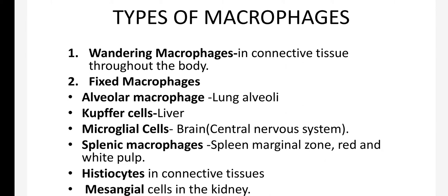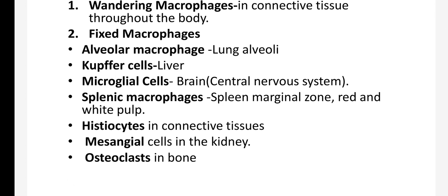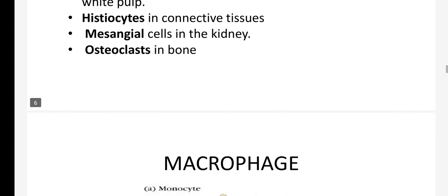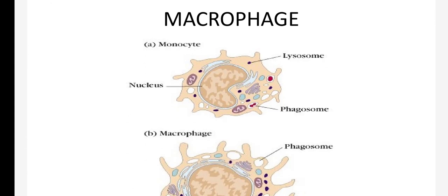There are also fixed macrophages — macrophages present in the lungs are called alveolar macrophages, Kupffer cells are present in the liver, microglial cells are in the brain, splenic macrophages are in the spleen, histiocytes are in the connective tissue, mesangial cells are in the kidney, and in the bones we call them osteoclasts.